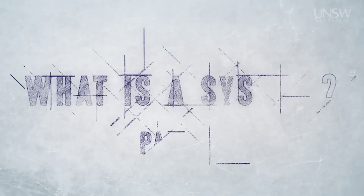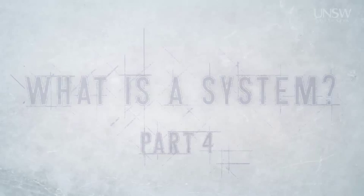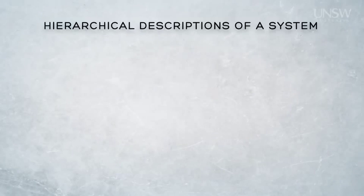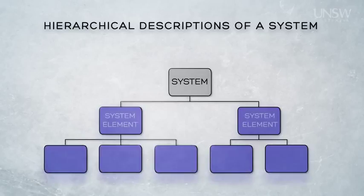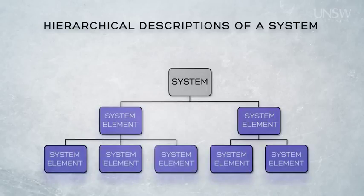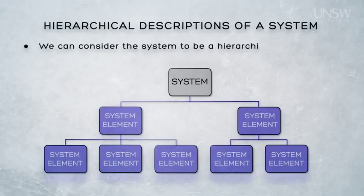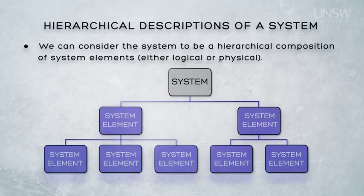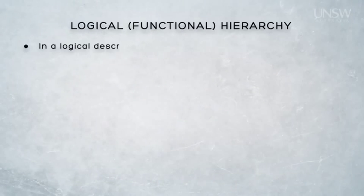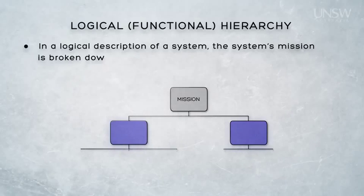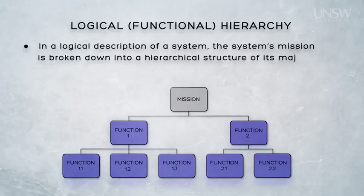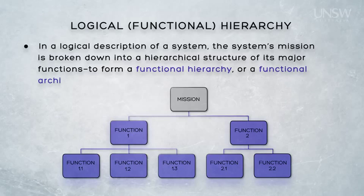A system can be defined as the combination of system elements which interact to achieve a defined mission. Since each of these system elements will need to perform functions allocated to it so it can contribute to the system's mission, we can consider a system to be a hierarchical composition of system elements. In a logical description, the system's mission is broken down into a hierarchical structure of its major functions — the logical description or architecture is therefore often called a functional hierarchy or a functional architecture.